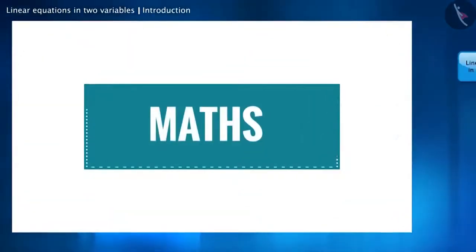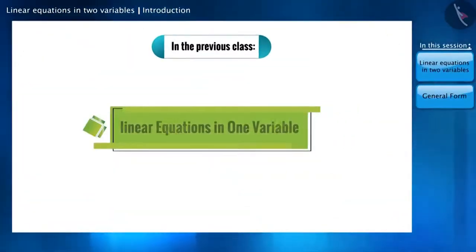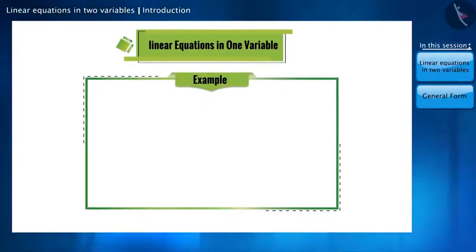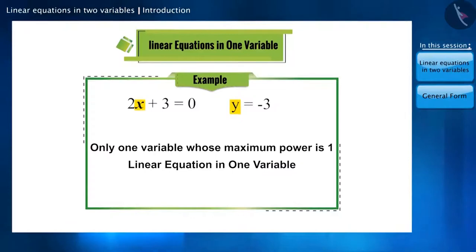Friends, welcome to this video on mathematics. In the previous class, we learned about linear equations in one variable. Here are some examples. Such equations have only one variable and its maximum power is 1. Therefore, it is called the linear equation in one variable.